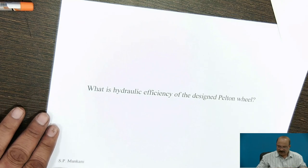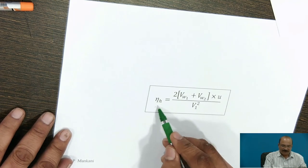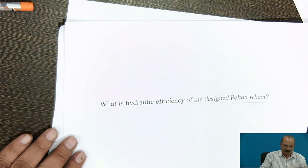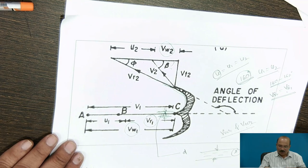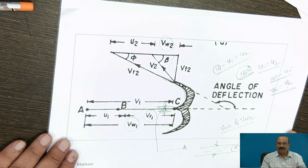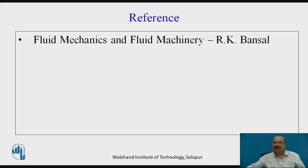Finally, the hydraulic efficiency of the designed Pelton wheel is calculated as 2 into (VW1 plus VW2) divided by V1 squared, multiplied by U. If this hydraulic efficiency comes out to more than 90%, the design is considered correct. Otherwise, correction factors need to be applied. For further details, refer to Fluid Mechanics and Fluid Machinery by R.K. Bansal. Thank you.